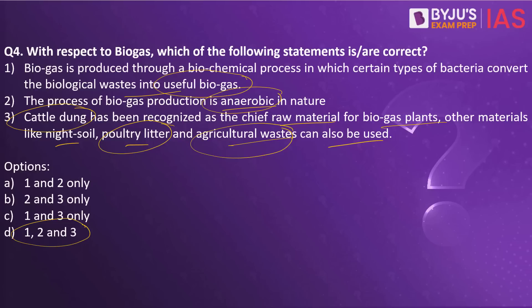The raw materials required for biogas production are available abundantly in villages. It not only produces biogas but also gives a rich slurry that can be used in crop production. Availability of biogas would reduce the use of firewood and hence trees could also be saved. However, there are a few issues associated with biogas — including pollution caused by burning wood, fossil fuels, and other materials — which can also have health impacts.